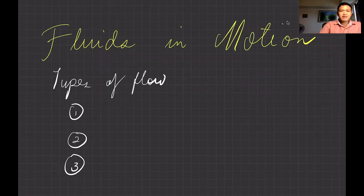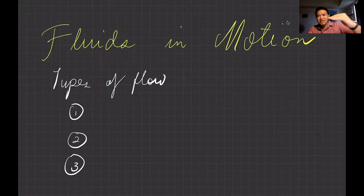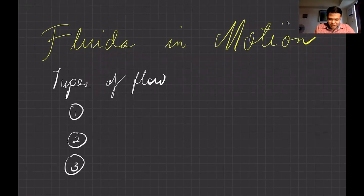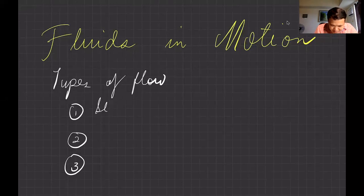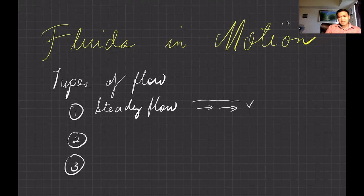There are different types of flow. The first type is called steady flow. It means the flow of fluid is constant — the velocity of the fluid particles doesn't change. There's no turbulence.